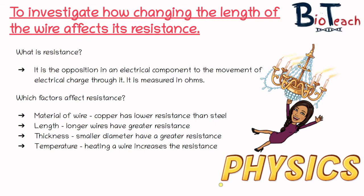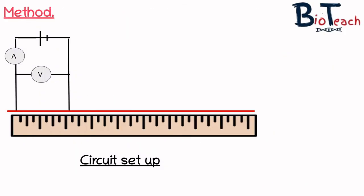So when you're investigating how changing the length of the wire affects its resistance, you have to think about controlling the material of the wire, the thickness of it, and the temperature. So let's have a look at the actual circuit setup.